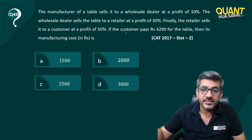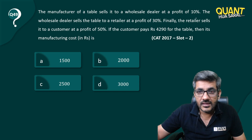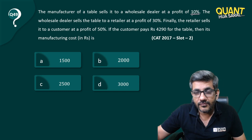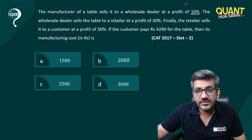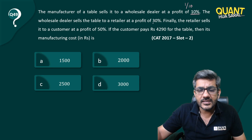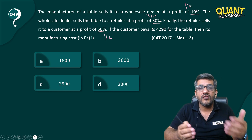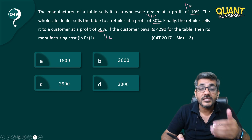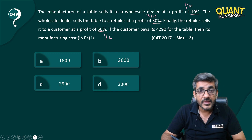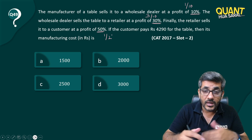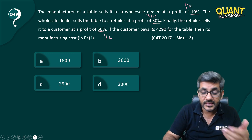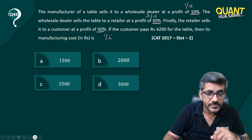In this question, there is an important point to understand. Initially it is sold at a profit of 10 percent, which is 1 by 10. Then it is sold at a profit of 30 percent, which is 3 by 10. And then it is sold at a profit of 50 percent, which is 1 by 2. So it is a successive increase in price by 1/10, then 3/10, then 1/2.